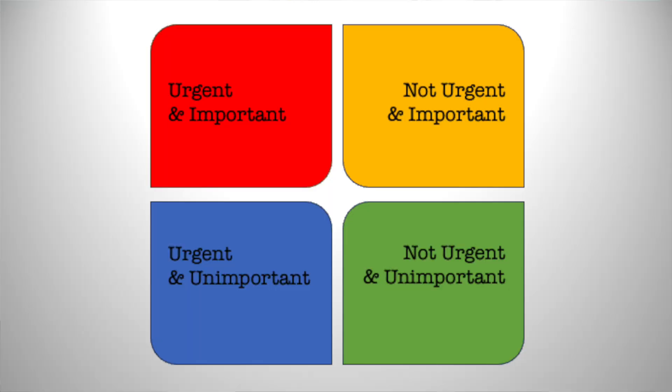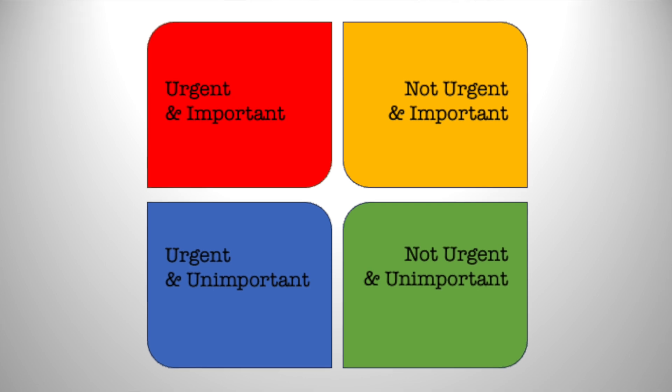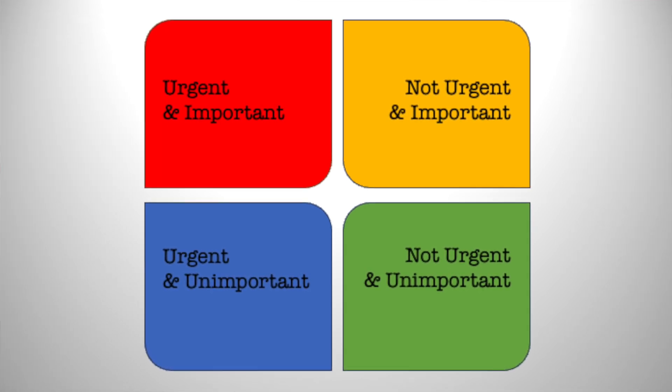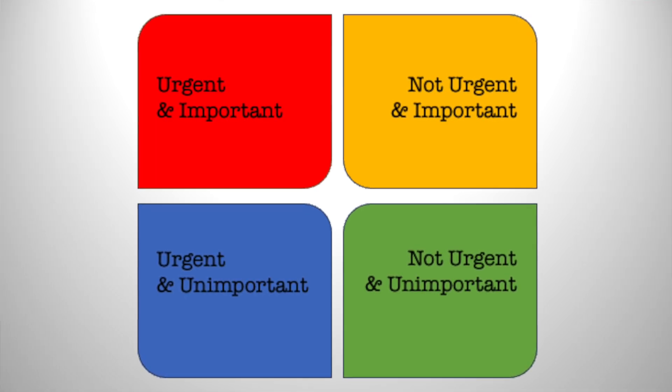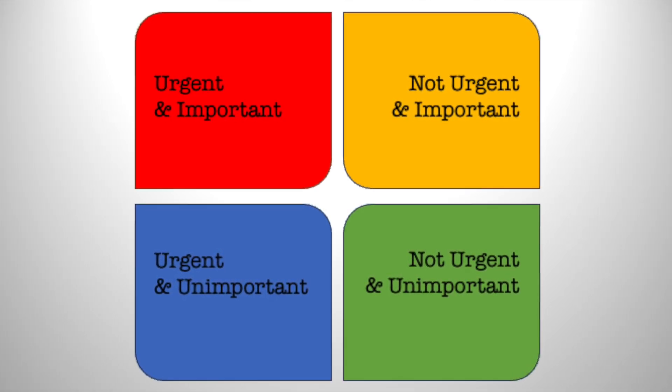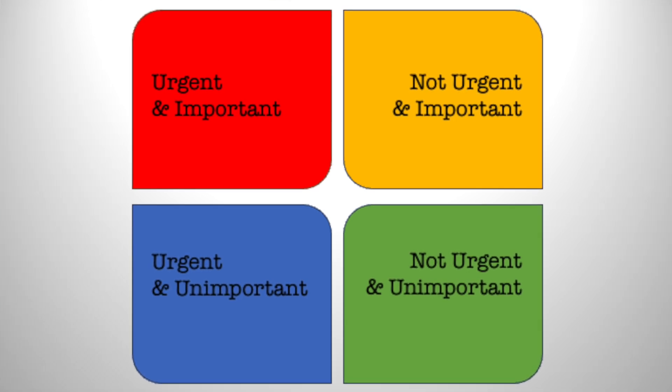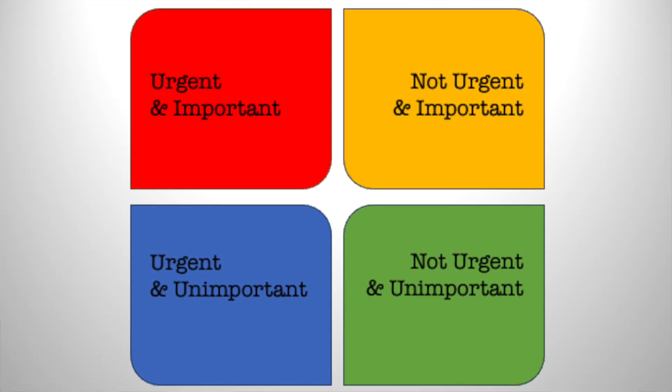So out of the box, TickTick gives you the Eisenhower Matrix, which has the four quadrants. Up in the upper left is the urgent and important. Over to the upper right is the not urgent and important. Down in the lower left is the urgent and unimportant. And then down in the lower right is the not urgent and unimportant. What TickTick does is they set filters for each of these quadrants — kind of a generic filter on what they think might fit that criteria.